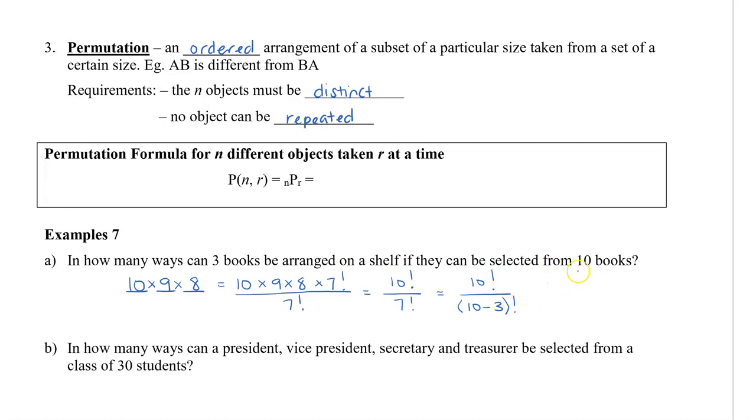We can think of this as there are ten books, and we want to choose three to rearrange. So this would be 10 P 3. If we calculate ten times nine times eight, that's going to be 720. But you also have an NPR button on your calculator, and that will also calculate for you without having to go through the formula.